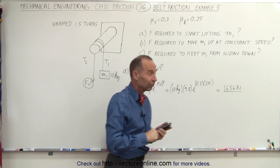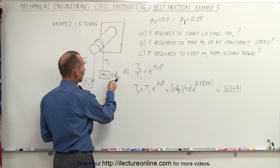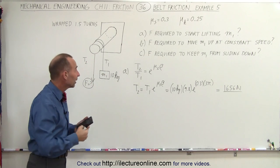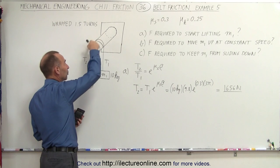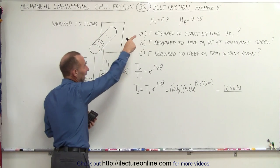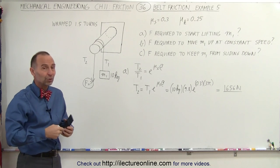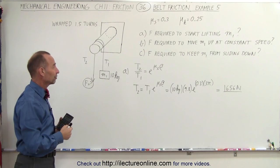Notice that's quite a bit of force. With an object that only has a mass of 10 kilograms, it requires quite a bit of force to start moving it up if the rope is wrapped one and a half times around the peg and the coefficient of static friction is 0.3. You can see the advantages of pulleys, which would eliminate that friction, of course.